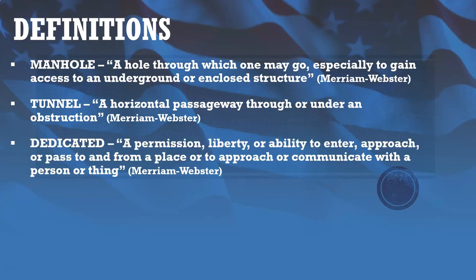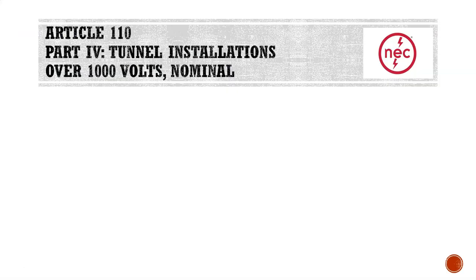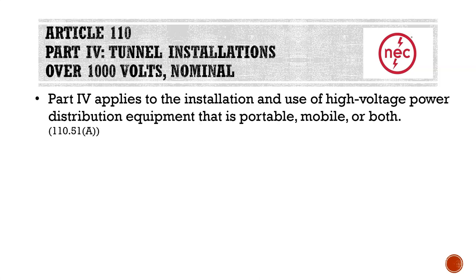Also 'dedicated' once again, as per the last lecture. Starting at article 110, part four: tunnel installations over 1,000 volts nominal — starting on page 52 of your 2017 edition of the NEC. Part four applies to the installation and use of high voltage power distribution equipment that is portable, mobile, or both. That's going to be the scope of part four.